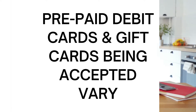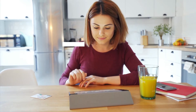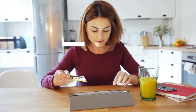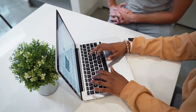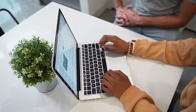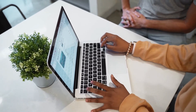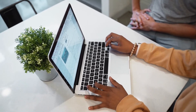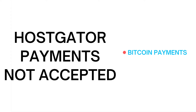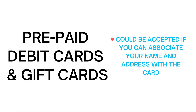When it comes to prepaid debit cards and gift cards, if you can associate your personal name and address with the card, more than likely it'll work. Some prepaid debit cards and gift cards will let you create an online account with your information — if so, this payment method should work but can vary. Payment methods that aren't currently accepted by Hostgator are Bitcoin payments. Prepaid debit cards or gift cards can vary as mentioned, as they work best typically if you can associate your name and address with the card.